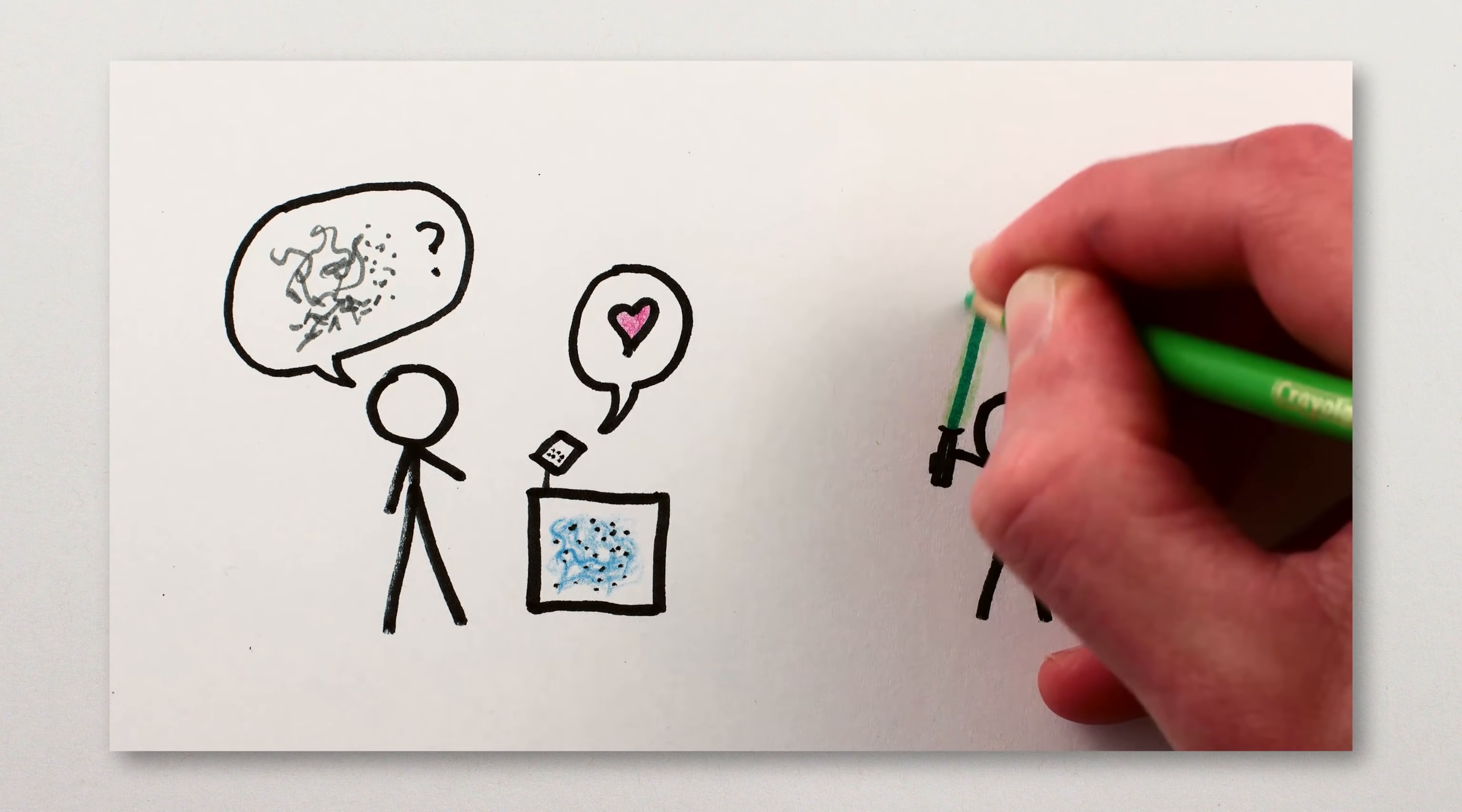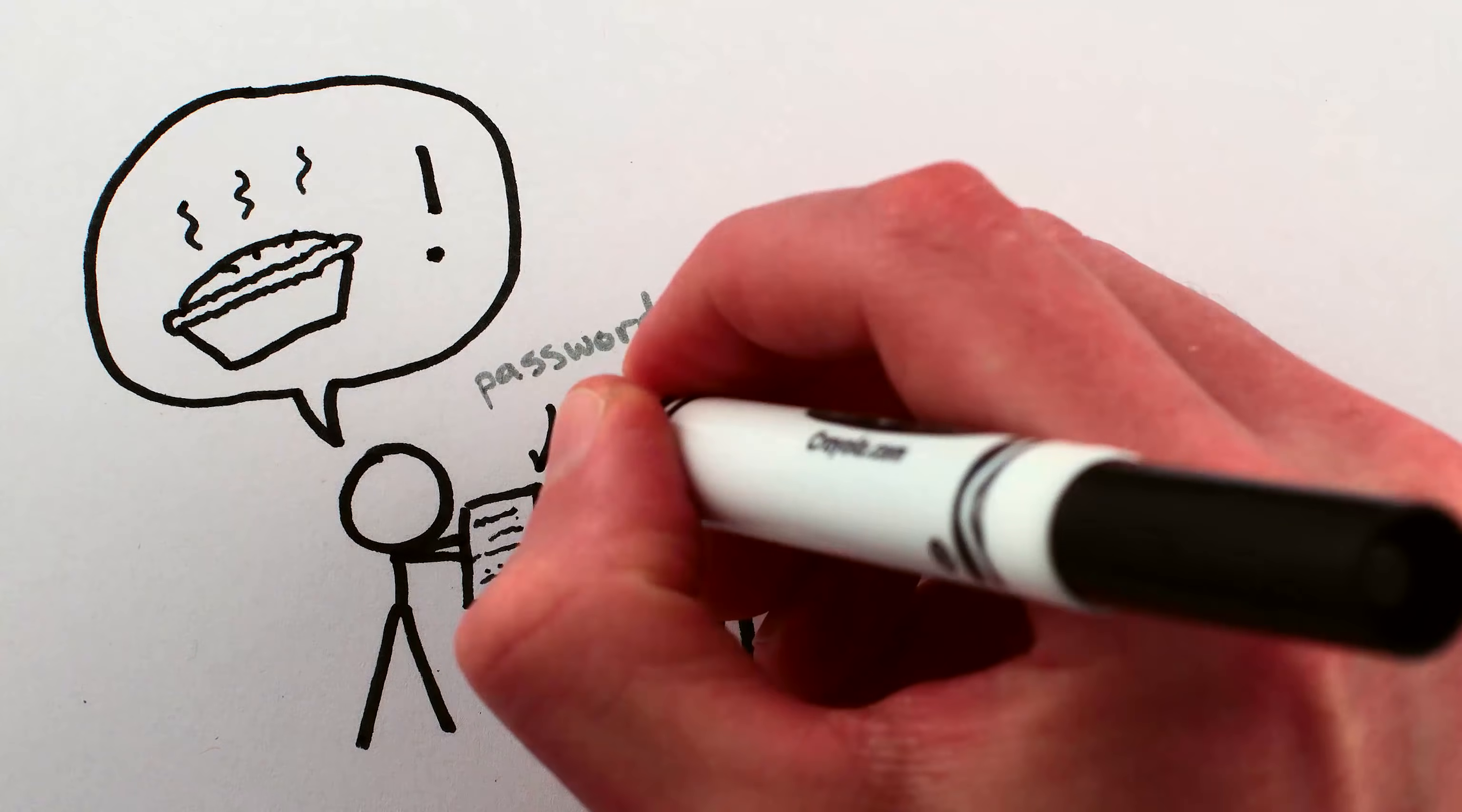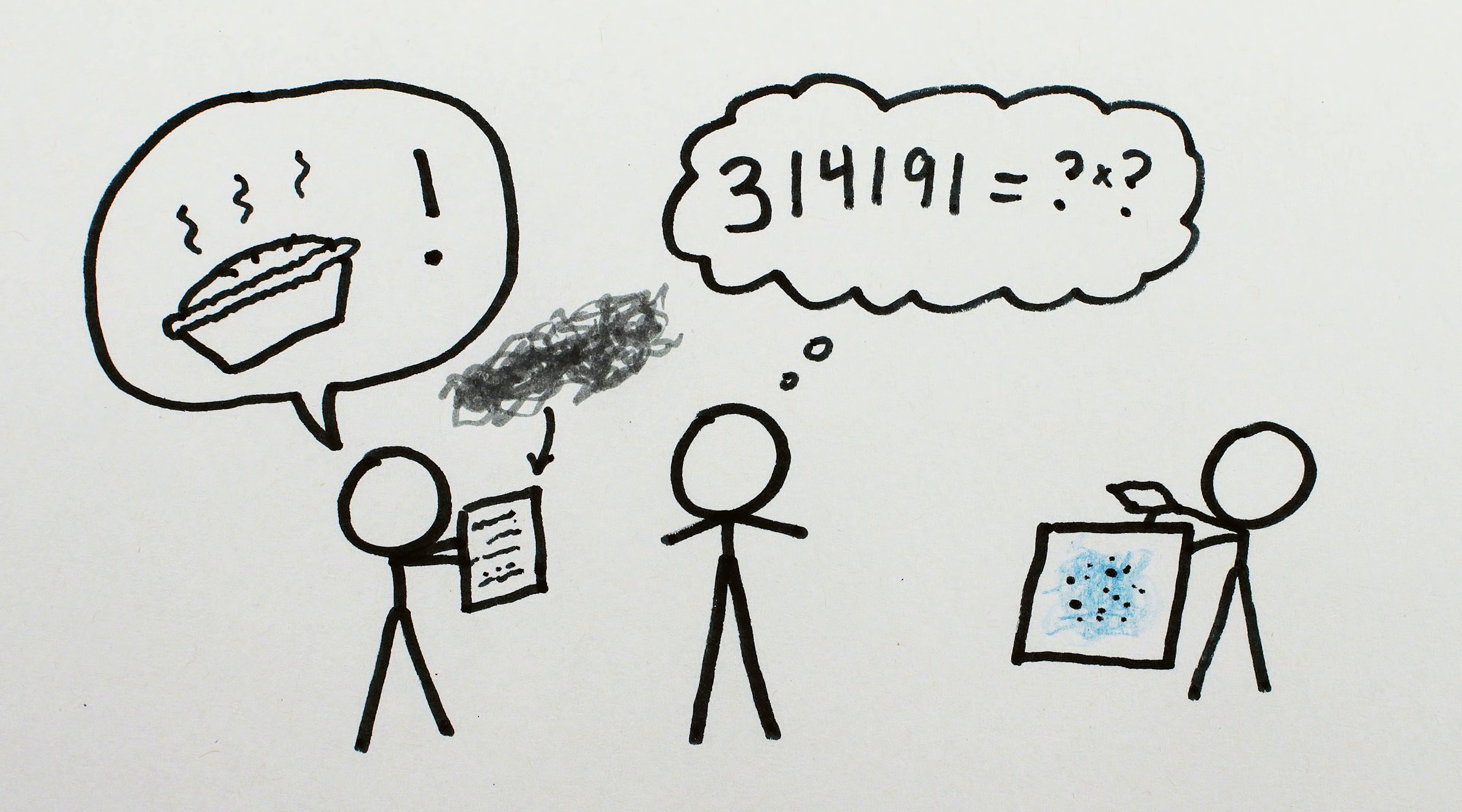As a follow-up to the main video about how quantum computers factor large numbers to break encryption, I want to demonstrate how Shor's algorithm would factor a real live number. Like, maybe you were bequeathed a bank vault full of pies, but the access code left to you was encrypted using the number 314191, and you can't get to the pies until you know the factors. Luckily, I happen to have a working quantum computer that can run Shor's algorithm.